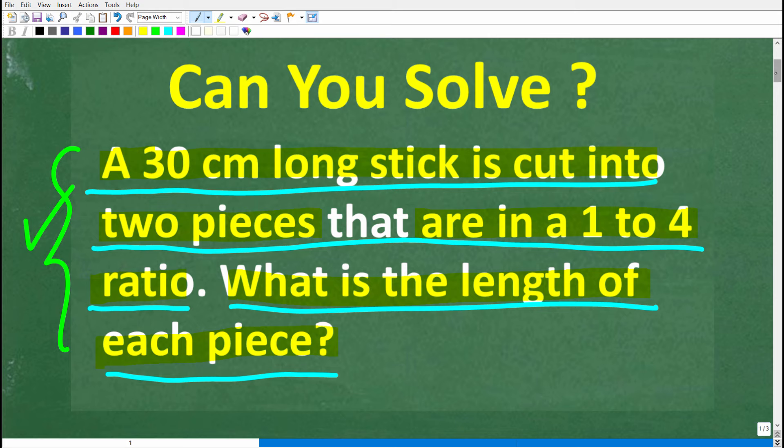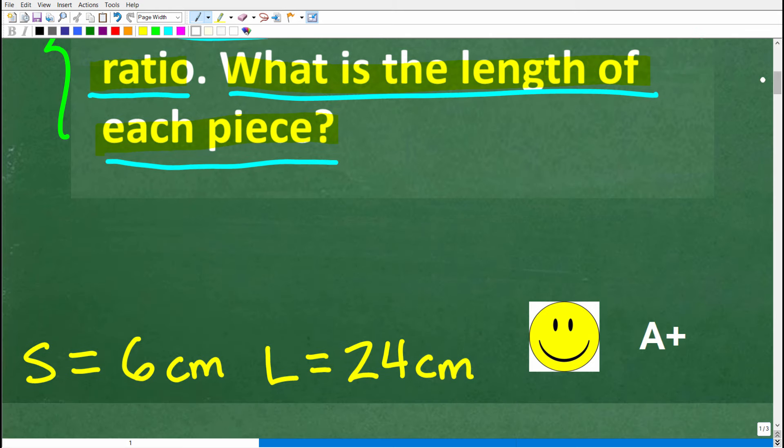All right, so let's take a look at the answer. So the correct answer is the following. The small piece is 6 centimeters and the larger piece is 24 centimeters. All right, now if you got this right, well, you definitely get a happy face and an A plus.